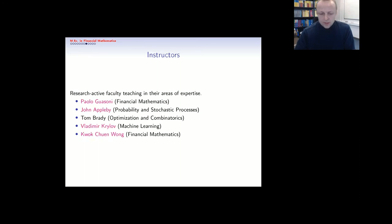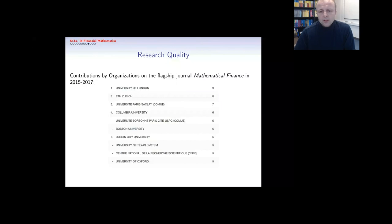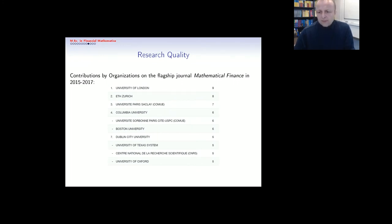The faculty here at DCU includes myself, Paolo Guazzoni, along with colleagues John Appleby, Tom Brady, Vladimir Kalov, and Ryan Wong. These are all active researchers making contributions in the areas they teach. In terms of research quality, DCU was recently rated seventh in the world in Mathematical Finance — the flagship journal in this field — according to Web of Science rankings.